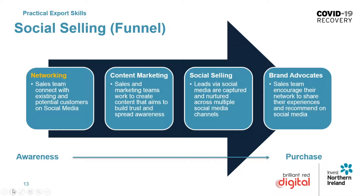These three stages are what social selling is really all about — using social media platforms to research, prospect, network, and share educational or informational content that answers questions and nurtures prospects. As a result, you build a relationship and trust, allowing prospects to believe in your business. When that prospect is ready to buy, they contact you first, having been nurtured along this process.